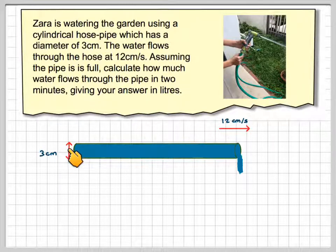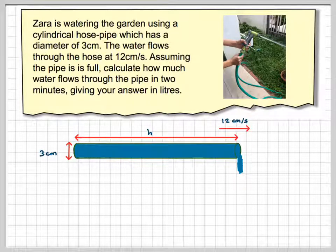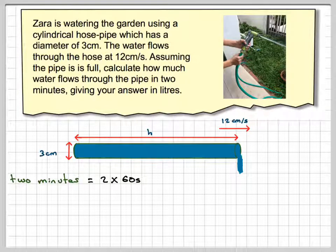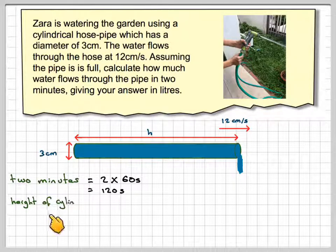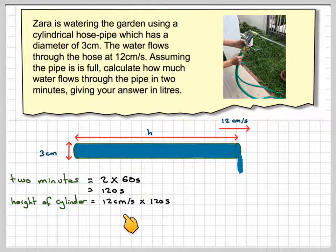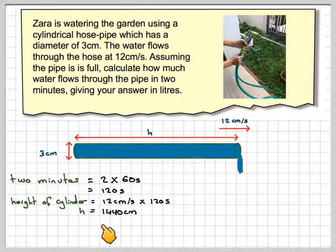So, we know the diameter of the pipe is 3cm, and what we need to calculate is this height here, or this length here. So, 2 minutes is 2 times 60 seconds, which gives me 120 seconds. The height of the cylinder is equal to 12cm per second times 120 seconds. So, that gives me that h will be 1440cm.